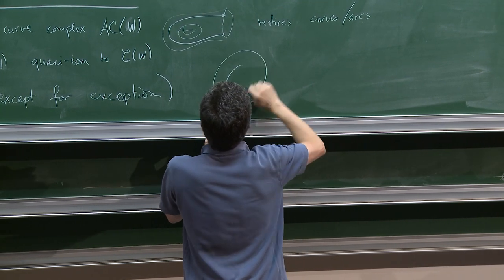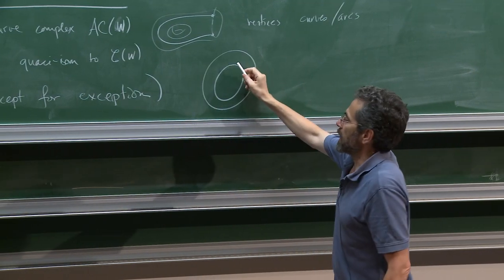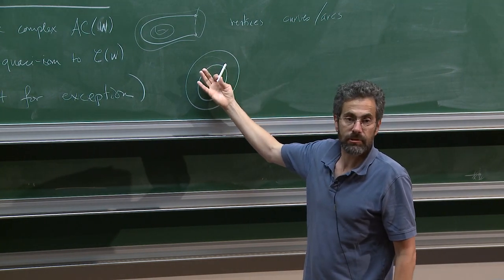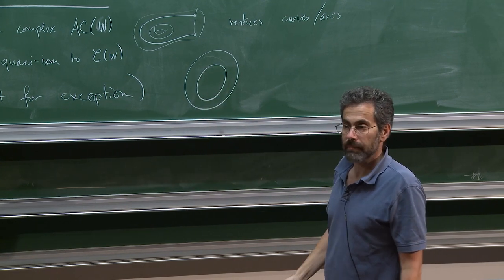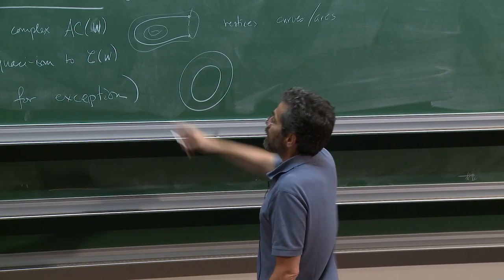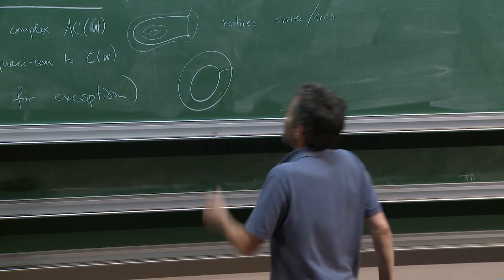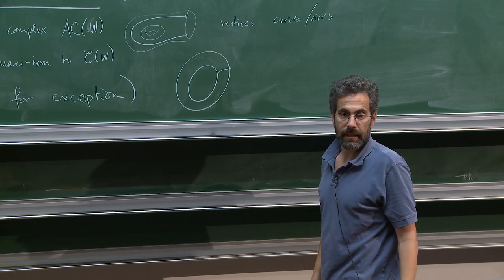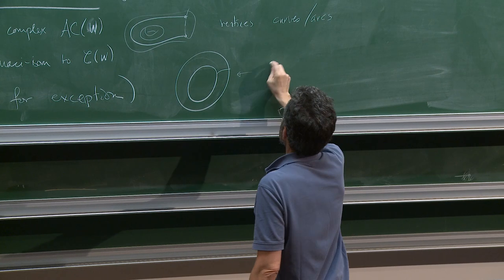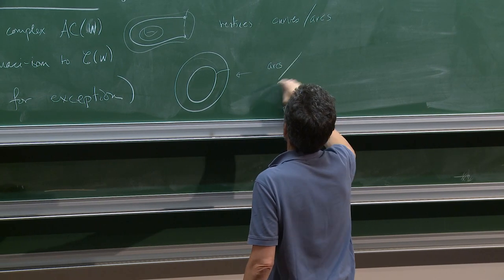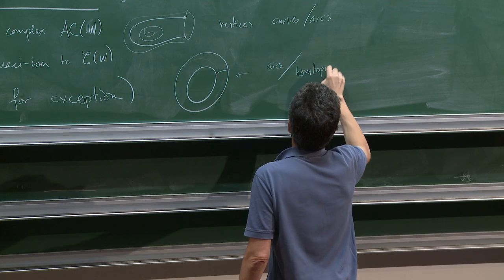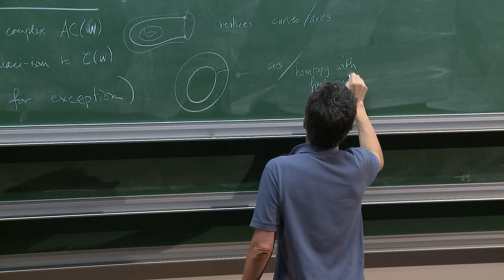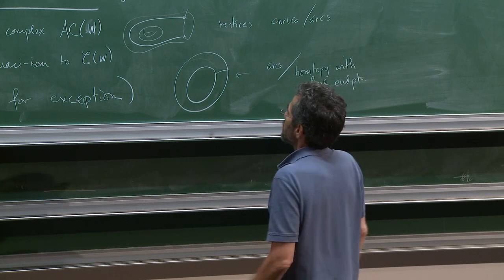If you take an annulus, the curve complex of the annulus is empty because there's just the core of the annulus, which is parallel to the boundary — there are no curves non-parallel to the boundary. And if you add arcs, it's still trivial because any two arcs are isotopic in the annulus. So here I should take arcs up to homotopy with fixed endpoints.